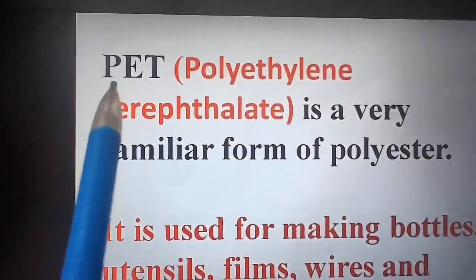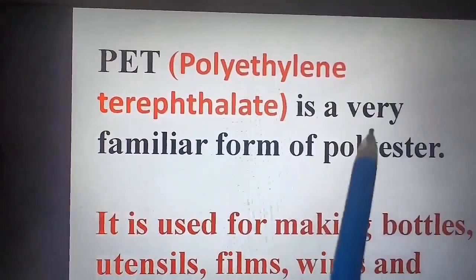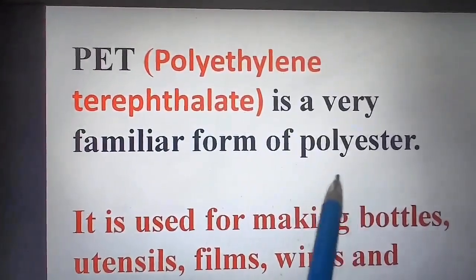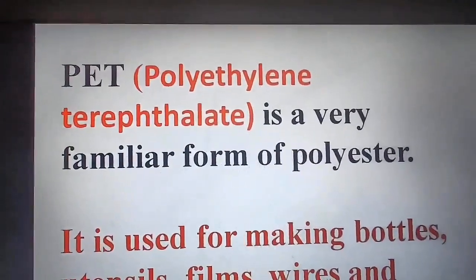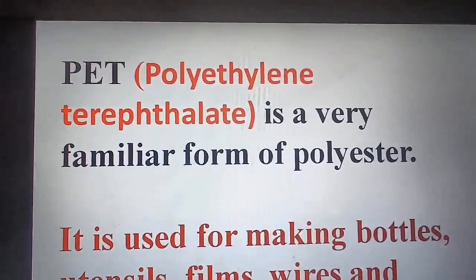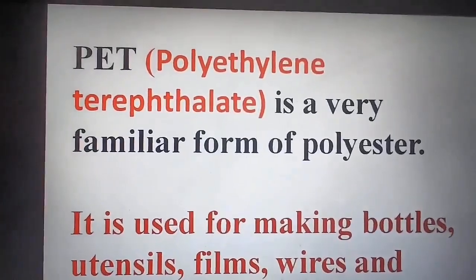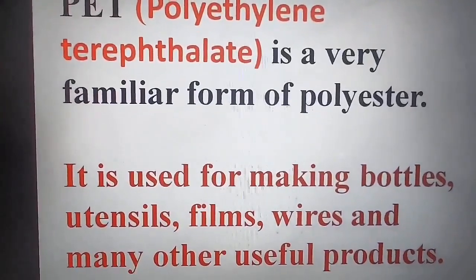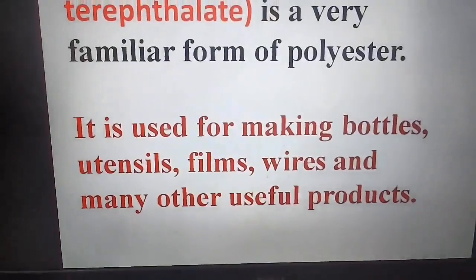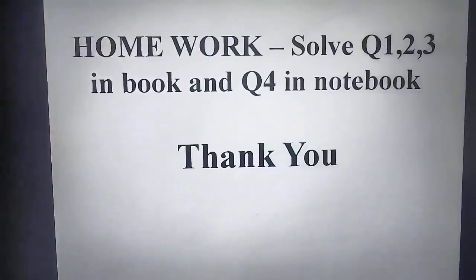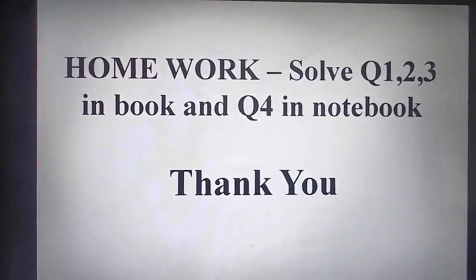PET stands for polyethylene terephthalate, which is a very familiar form of polyester. You must have noticed PET written on many plastic water bottles. PET is used in making water bottles, utensils, films, wires, and many other useful products. Your homework: solve question numbers 1, 2, and 3 in the book and question number 4 in the notebook. Thank you.